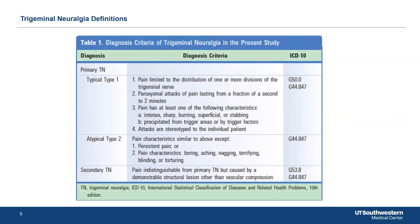Trigeminal neuralgia — this classification has mostly come from Dr. Burchill at Oregon Health Sciences. The key factors are that the pain should be in the trigeminal nerve distribution — V1, V2, or V3 — there are paroxysmal attacks, intermittent attacks that can last seconds up to minutes, and it should be an intense or sharp stabbing pain precipitated by a trigger.